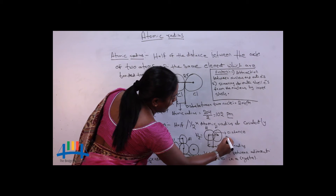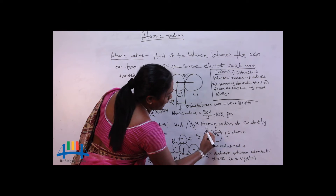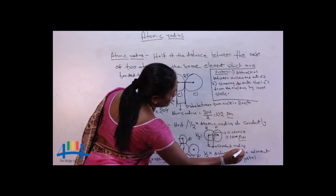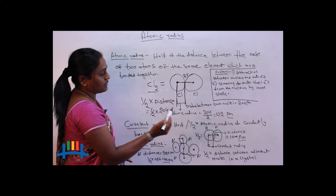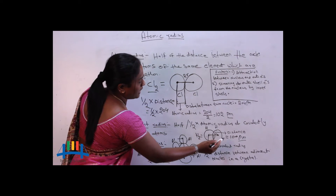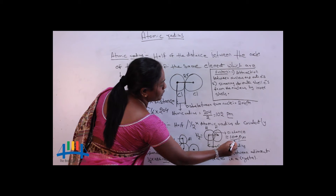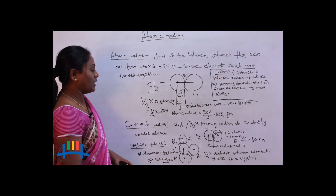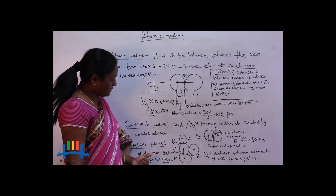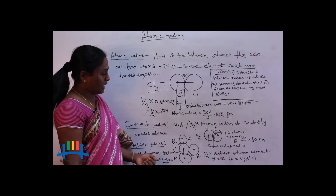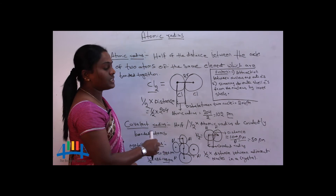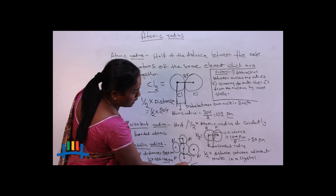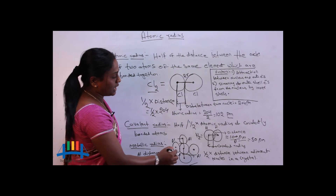If the distance between the two hydrogen nuclei is 100 picometers (pm), then the covalent radius of hydrogen will be 100 divided by 2, which equals 50 pm. Another type of atomic radius is metallic radius. Metallic radius is present in metals — take aluminum crystal as an example.